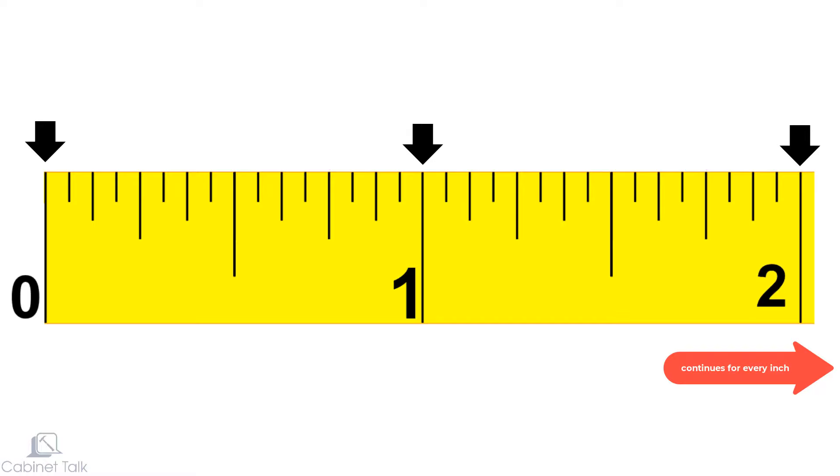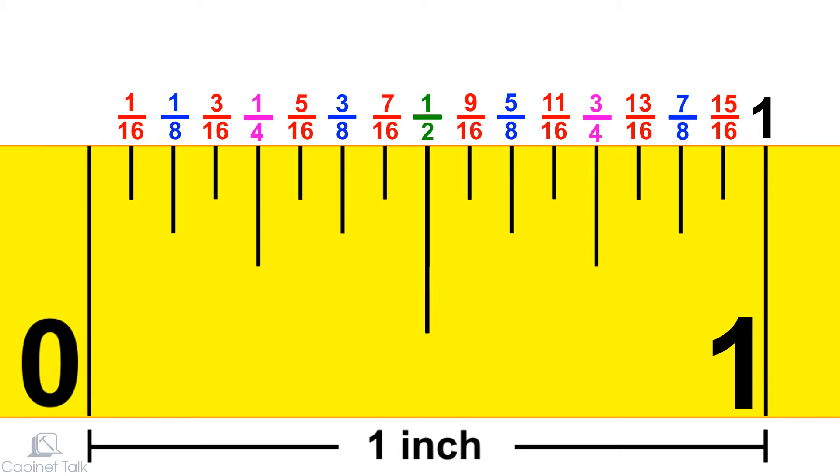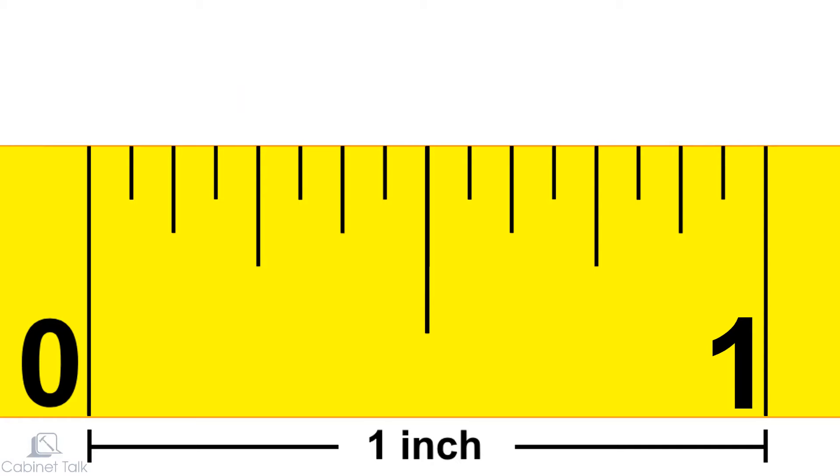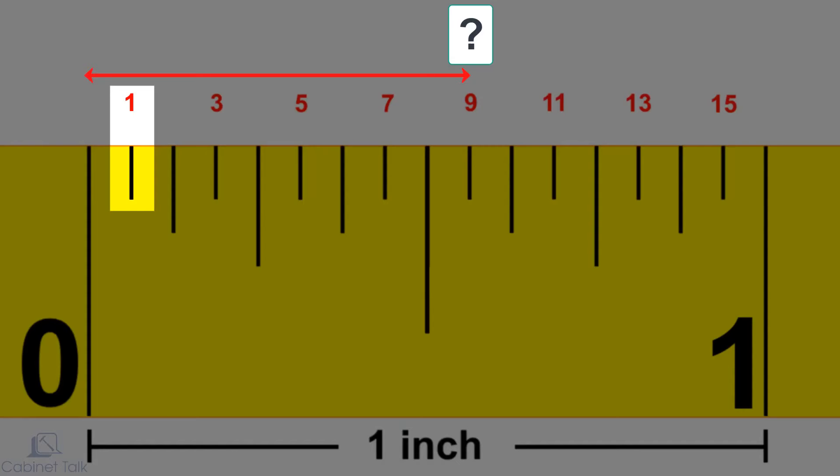Eventually, you'll want to memorize these marks, but here are some tips for reading the tape. You can use the different marking lengths to quickly find a measurement. Let's say we want to know this measurement. We know that the shortest marks are used for sixteenths. Count each of these marks using odd numbers: one, three, five, seven, nine - nine sixteenths.